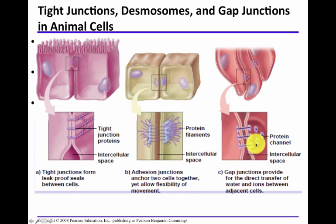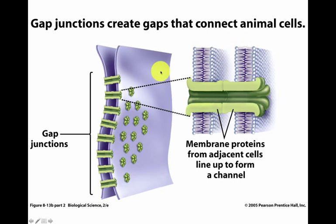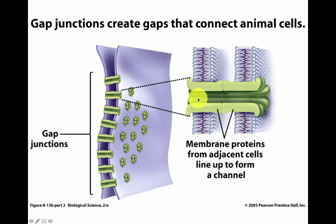Gap junction proteins are grouped in cylinders of six, and the cylinder can be open to form a small pore allowing communication between two adjacent cells. Looking at another diagram, one cell's plasma membrane connects to another cell's plasma membrane. The pore is made of six protein subunits, and when the gap junction is open, there is direct communication between the two cells.